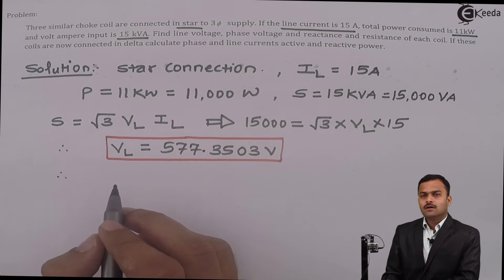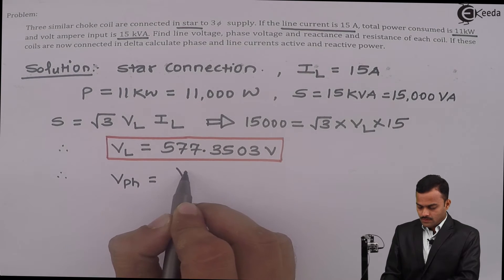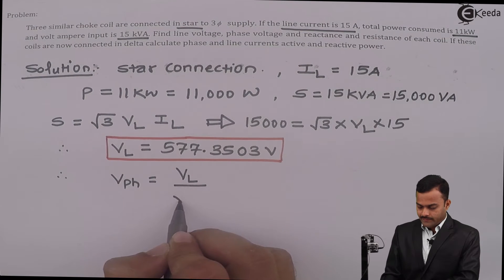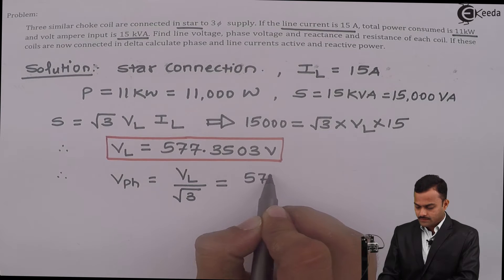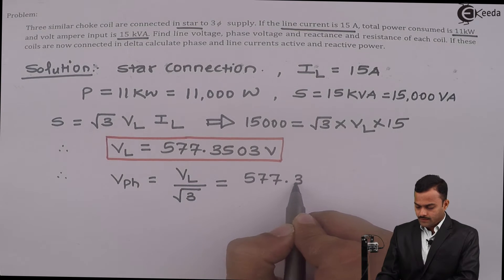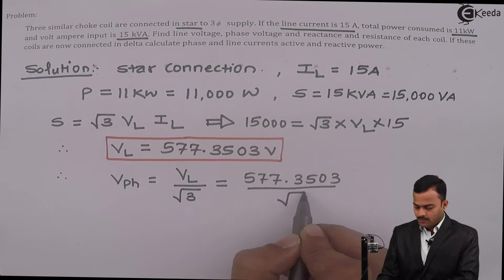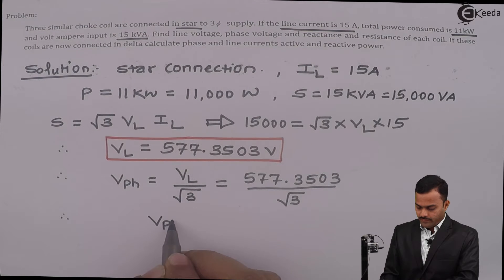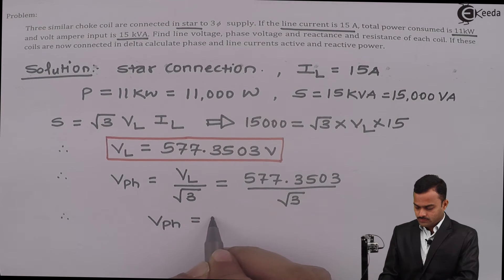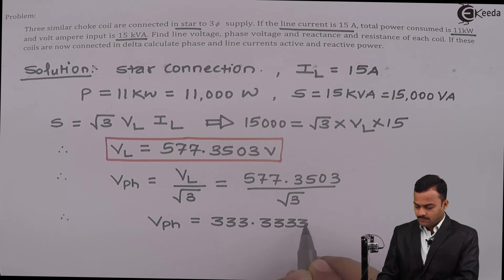It is a star-connected load, therefore phase voltage equals line voltage divided by √3. So V_PH = 577.3503 divided by √3, which gives phase voltage equal to 333.3333 volt.